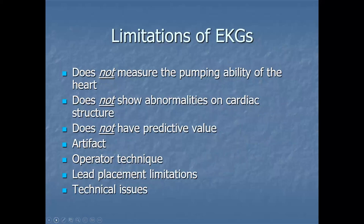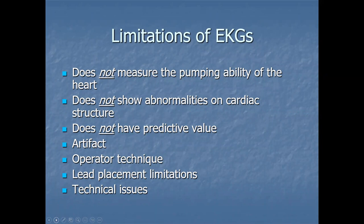Limitations of ECGs: they do not measure the pumping ability of the heart — for that you need a cardiac ultrasound or other tests. They do not show abnormalities in cardiac structure. Crude abnormalities such as cardiomegaly can be visualized on a chest x-ray via the cardiac silhouette, but cardiac ultrasound would clearly show structural abnormalities, as would results from the cath lab.